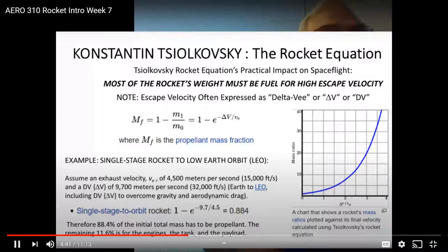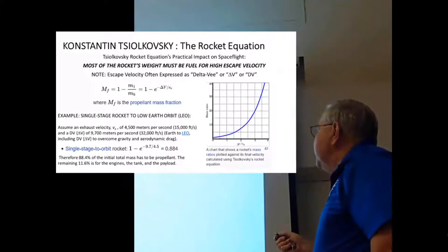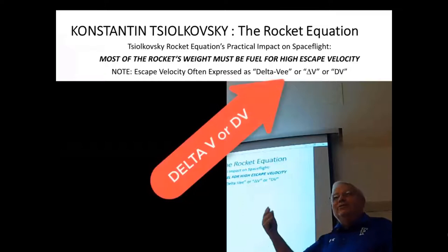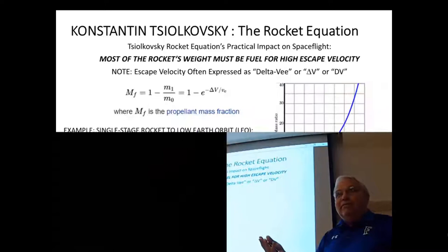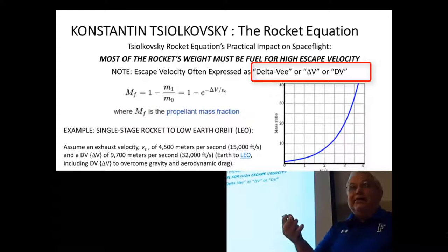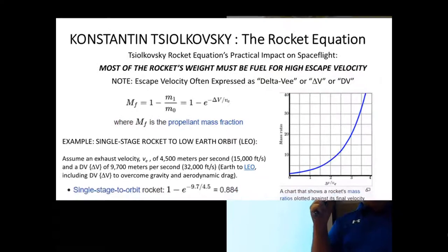Tsiolkovsky's equation - we have to introduce the concept called delta V. What's the velocity change I need my rocket to get to go into orbit? There's a certain delta V required to escape Earth's gravity, a certain delta V required to go into low Earth orbit, a higher delta V to go into high Earth orbit, and then of course to go to the Moon or to Mars. They're all expressed as what kind of delta V that I need, or DV.